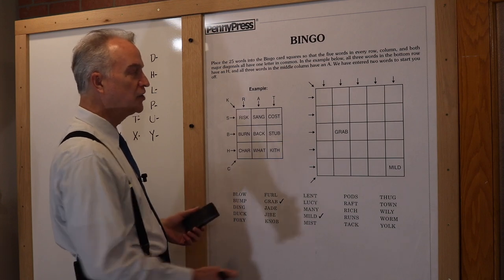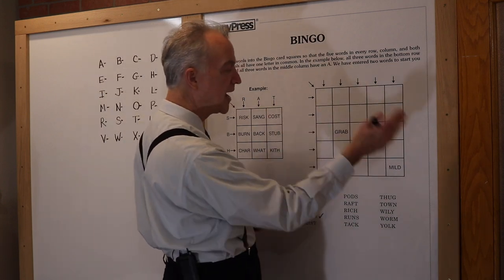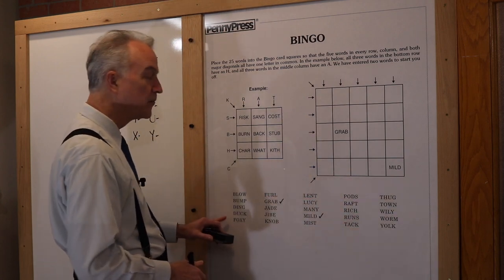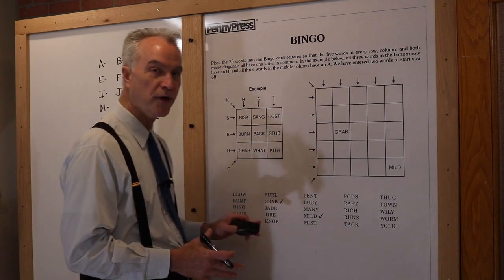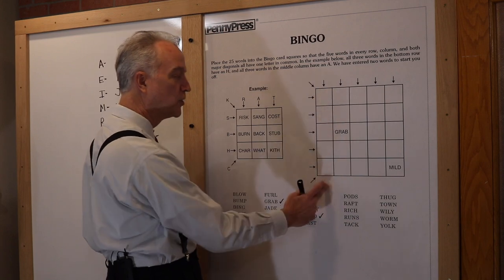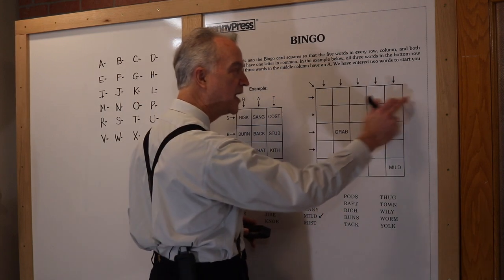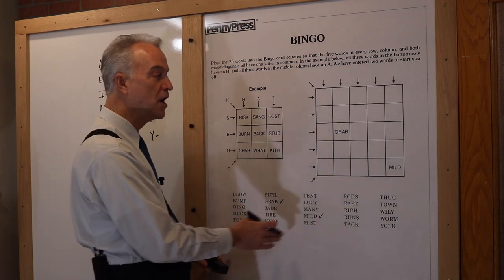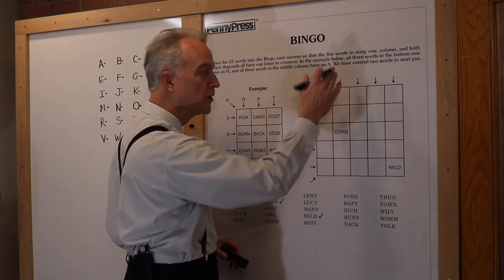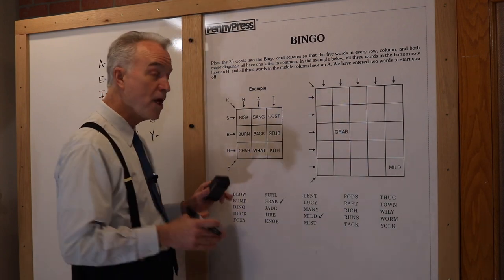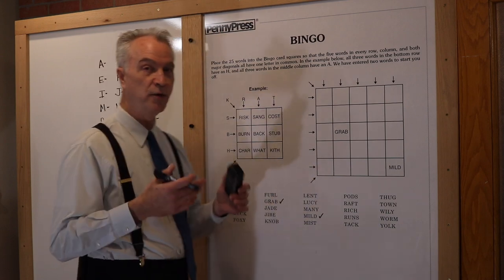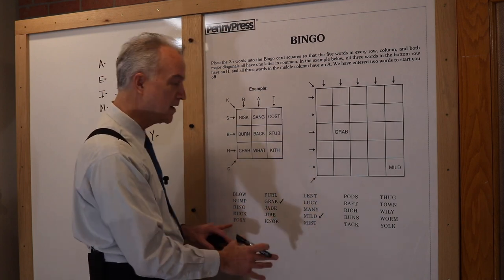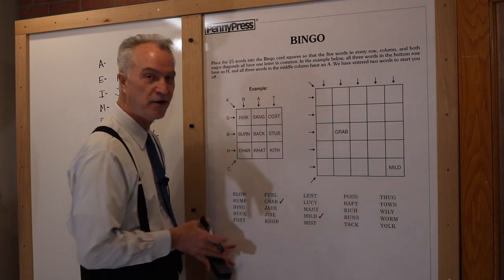Each one of these rows, columns, and diagonals has to have a common letter. If we look at all of these words, we're going to have to find at least five words that have a letter in common for it to work from top to bottom, side to side, or on the diagonal. If we don't have that letter showing up in at least five of these words, we won't be able to fulfill one of the rows, columns, or diagonals. So the first thing we should do is count how many times each letter of the alphabet appears in our list of words.